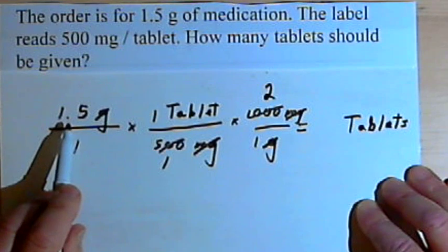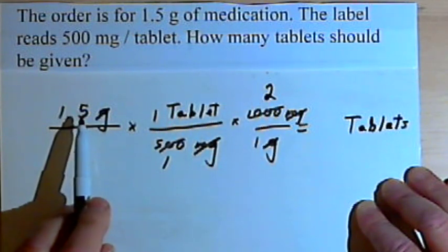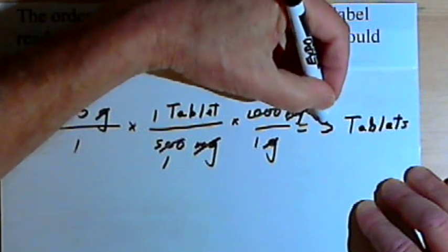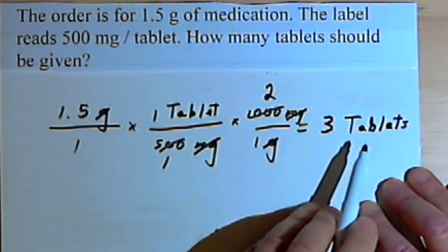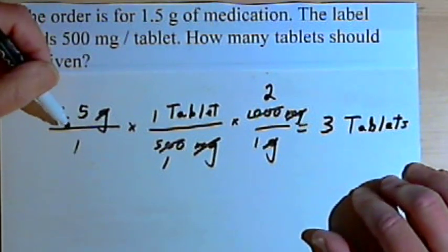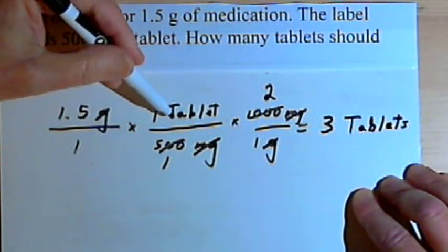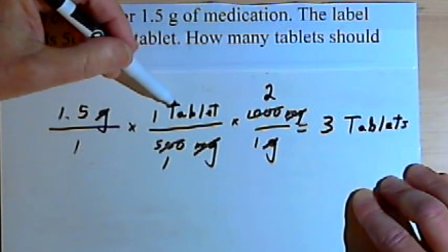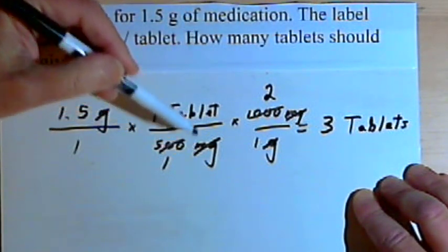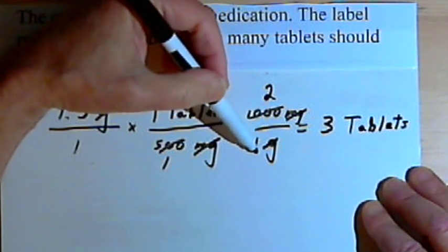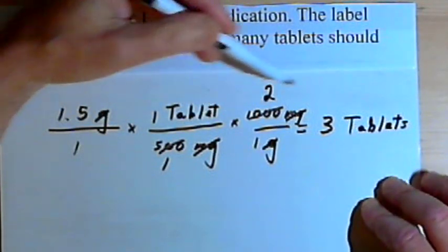After canceling units, the only unit left is tablets. Multiplying across: 1.5 times 1 tablet times 2 — since 2 times 1.5 is 3, that gives 3 tablets. The denominators are all 1, so my answer is 3 tablets. To summarize: we took the amount ordered, multiplied by the label information with tablets in the numerator, then added a conversion fraction of 1,000 milligrams over 1 gram to handle the grams-to-milligrams difference. We simplified first, multiplied across, and ended up with our answer.